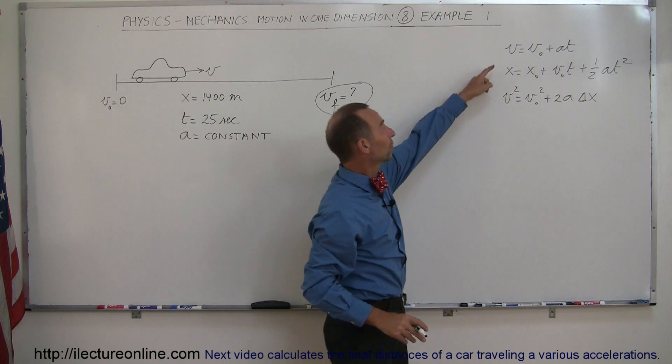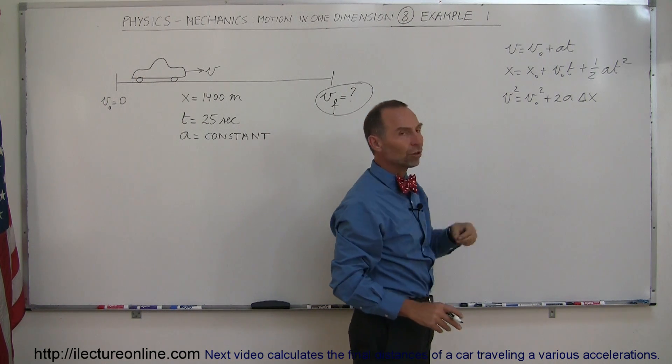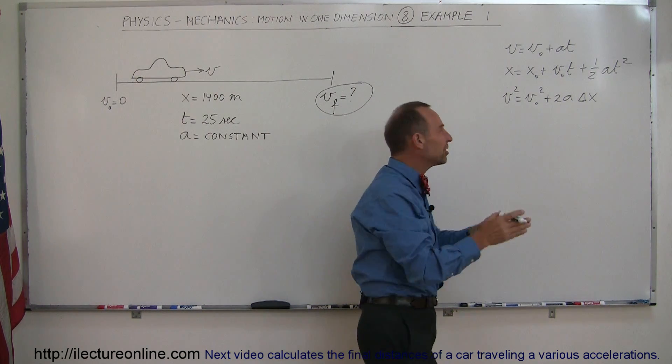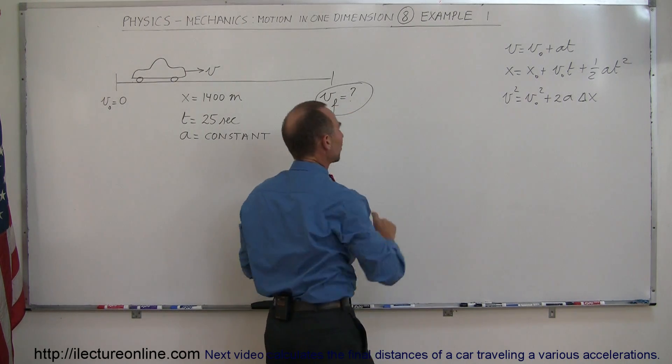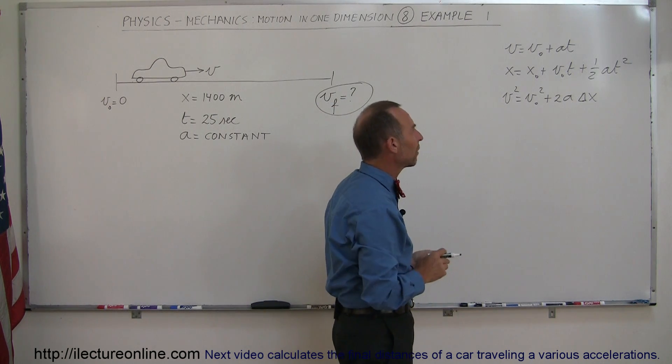Now remember that the V, the X, and the V squared, those are the velocity typically at the end of the event. So that would be the final velocity. We don't write sub-f, but we really do mean sub-f.